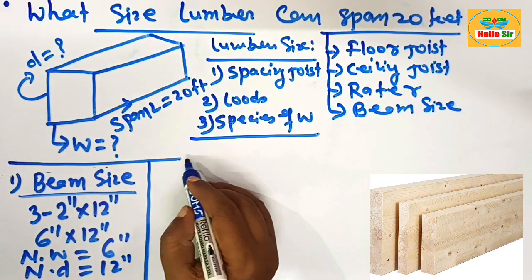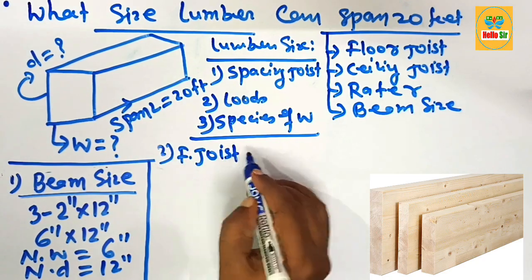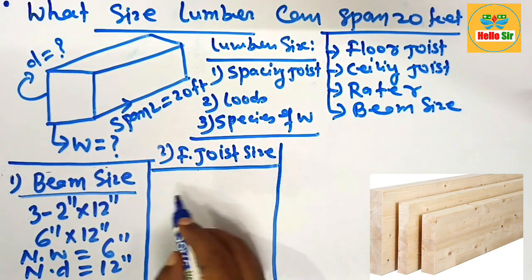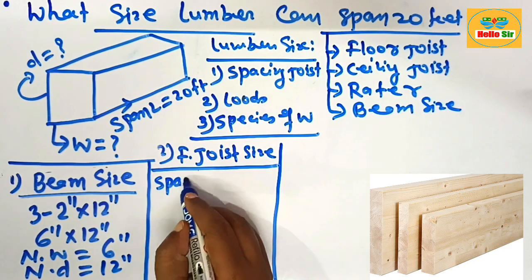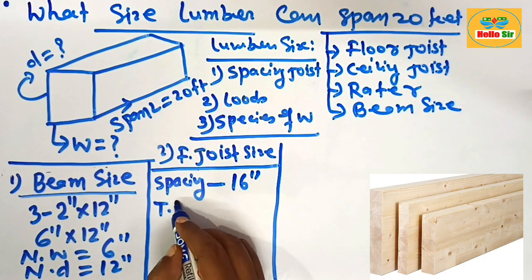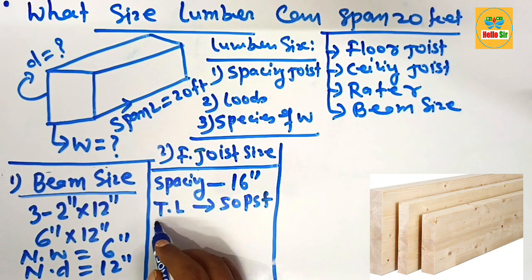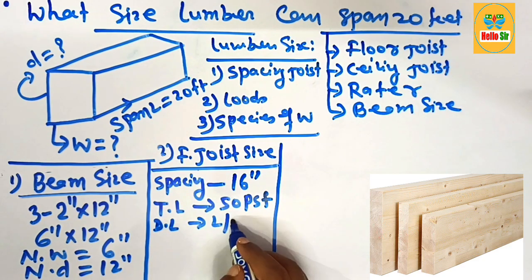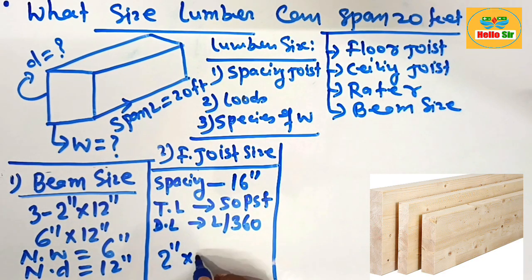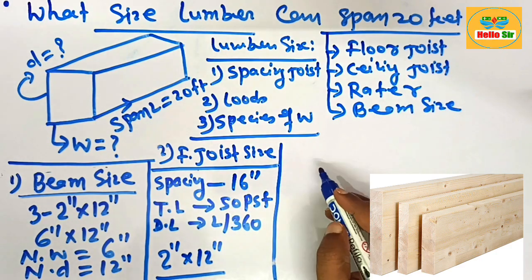Now understand what floor joist size is required to span 20 feet. The spacing between the joists is about 16 inches, and the total load of the structure is 50 pounds per square foot. The deflection limit is L/360. The floor joist size should be 2-inch by 12-inch dimensional lumber to span 20 feet.